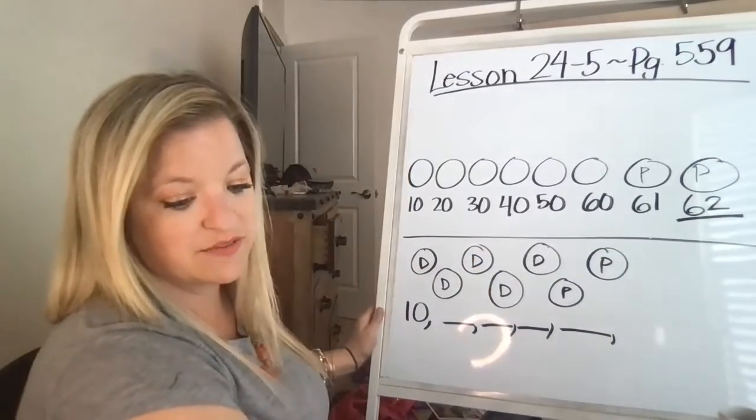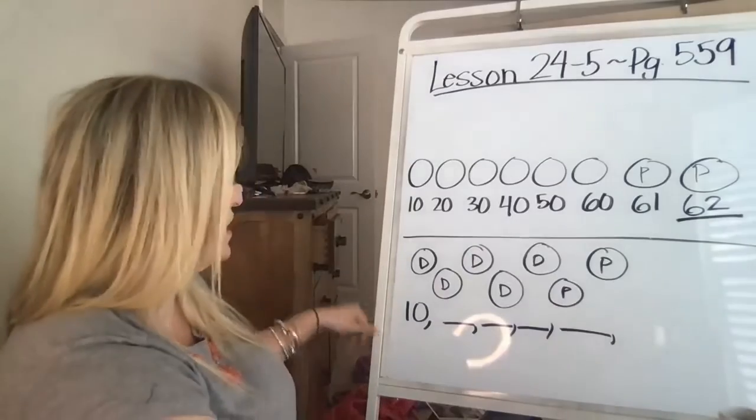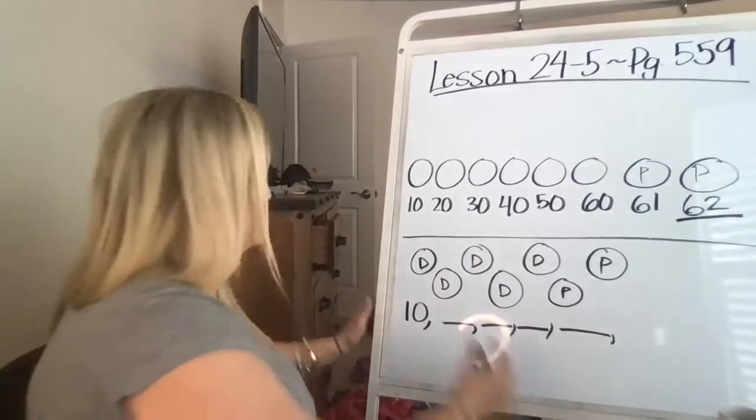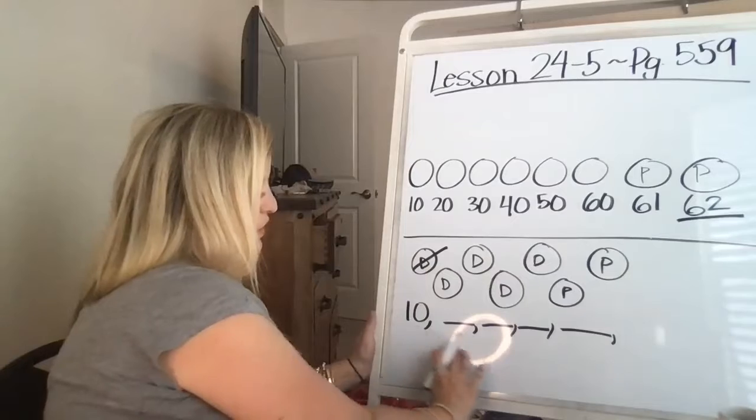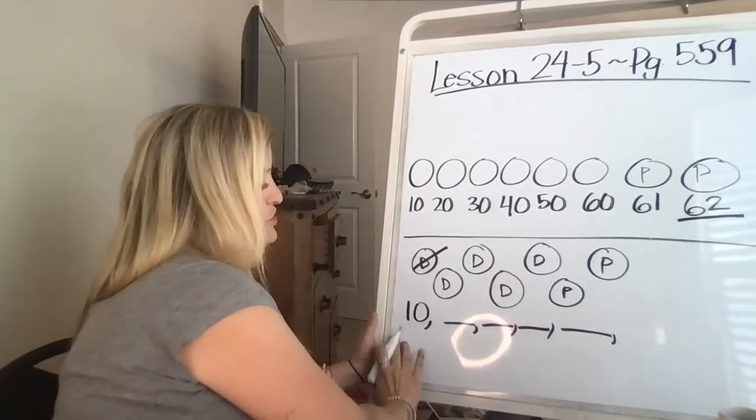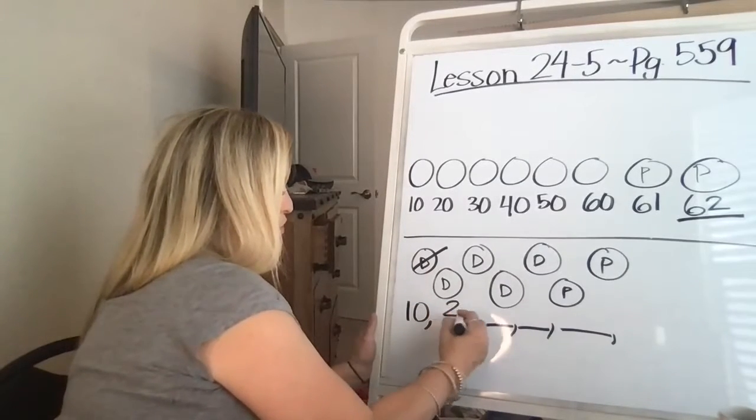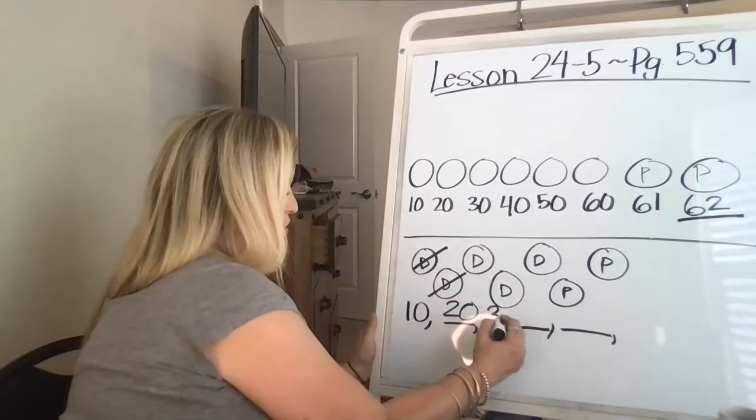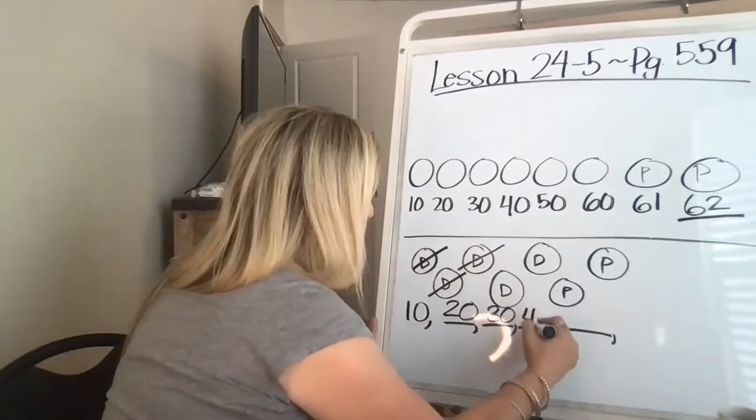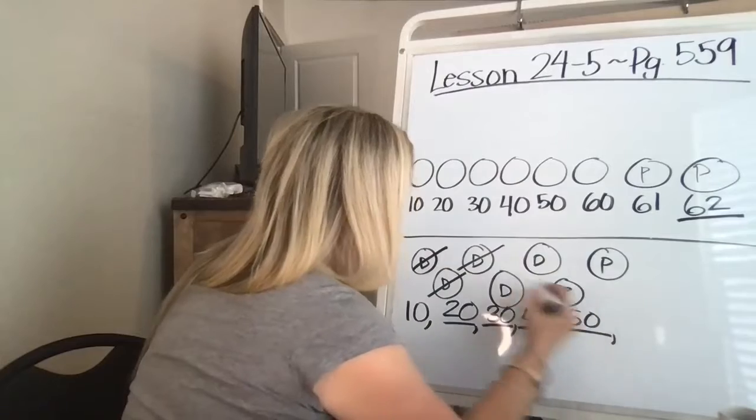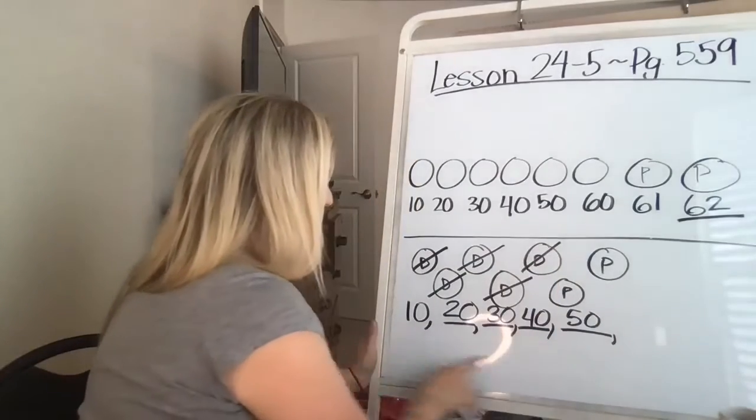Now down below it says what is the value of these coins? And it gives you the first one which is a dime which is 10. So we're going to do the coins that have the largest value first which is a dime over a penny. So 20, 30, two more, 40, 50. So I should have five dimes.